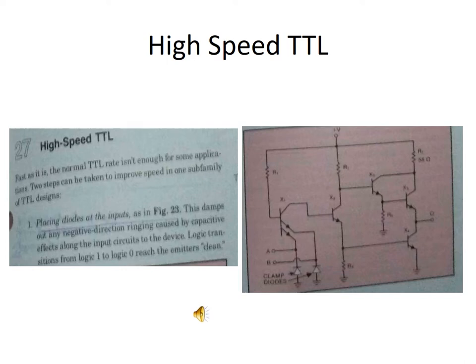The next one is High-Speed TTL — high-speed transistor-transistor logic. High-speed TTL is similar to standard transistor-transistor logic, but the difference is it provides clamp diodes. You can see the clamp diodes are connected to the A and B inputs. By providing the diode at the input, it can prevent negative floating current, allowing the circuit to provide clean logic 1 or logic 0, which improves high-speed operation. This is the high-speed transistor-transistor logic.